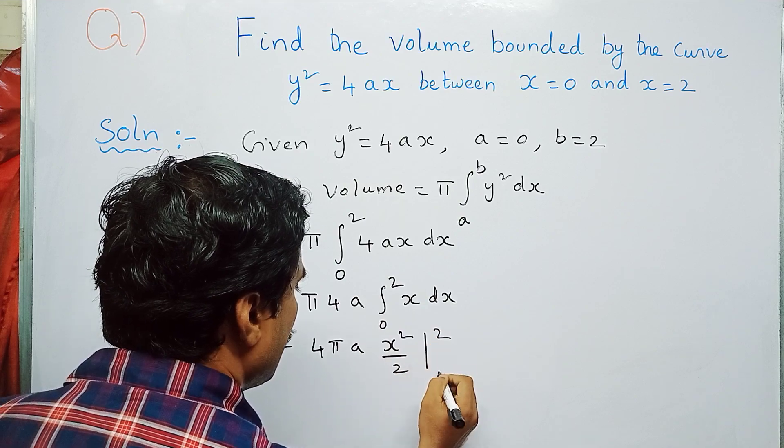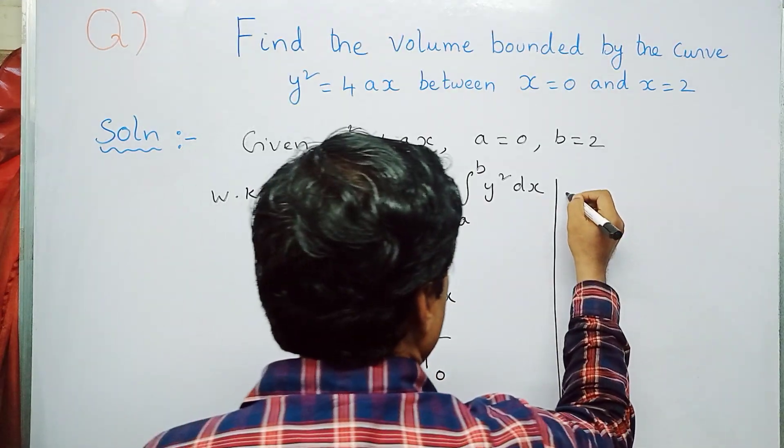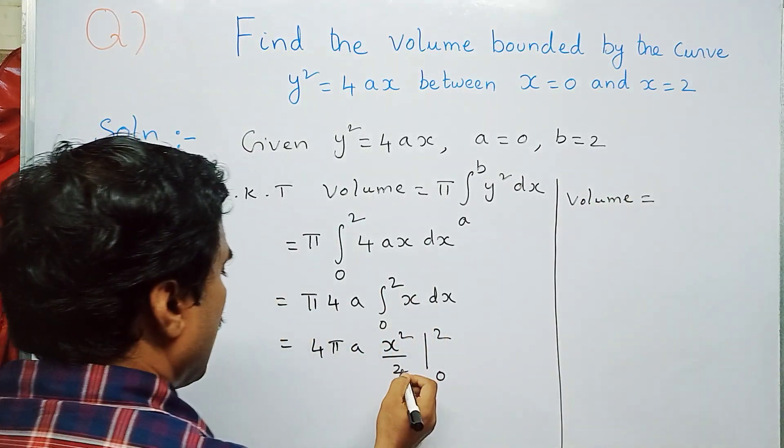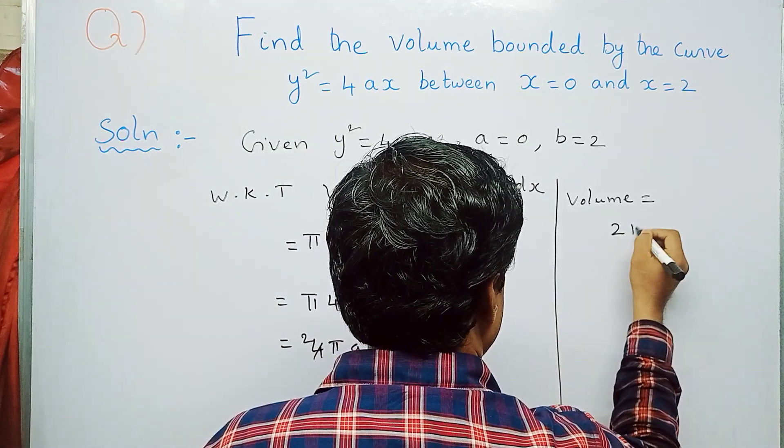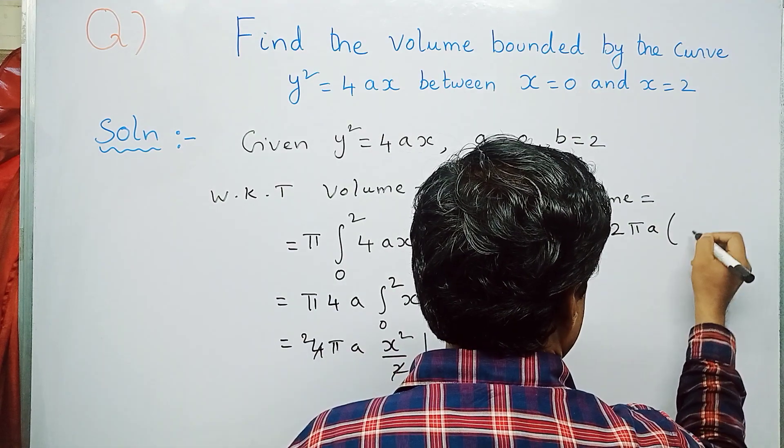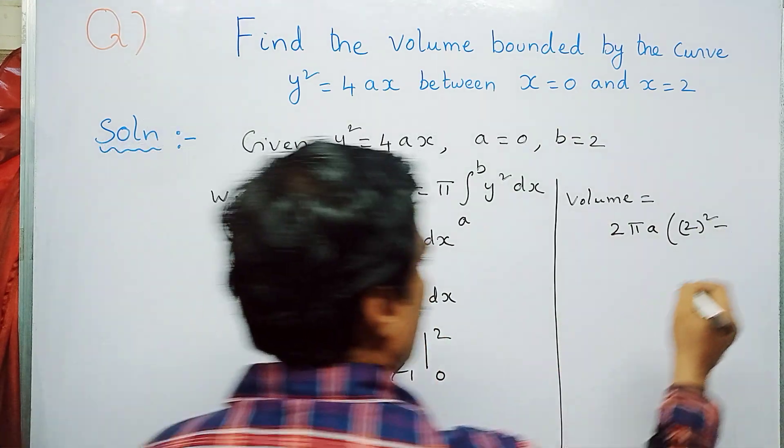Next step, volume equals—you can cancel here, 2 into 2, so remaining is 2πa. Now in place of x, put the upper limit, that is 2² minus the lower limit, that is 0².